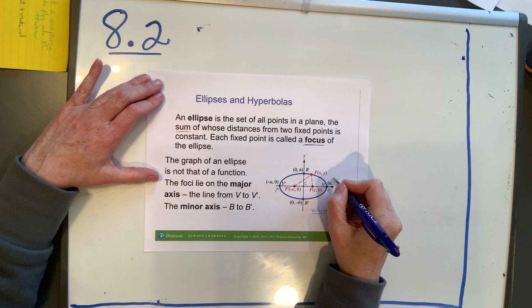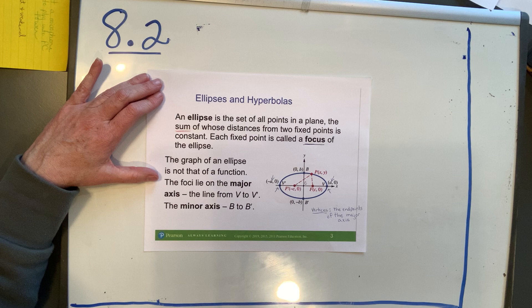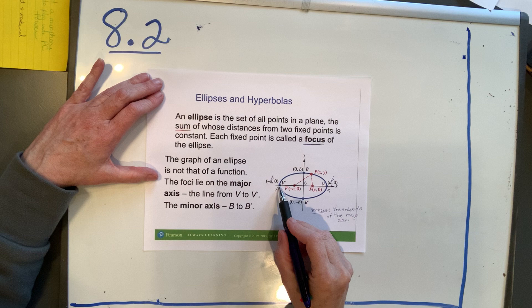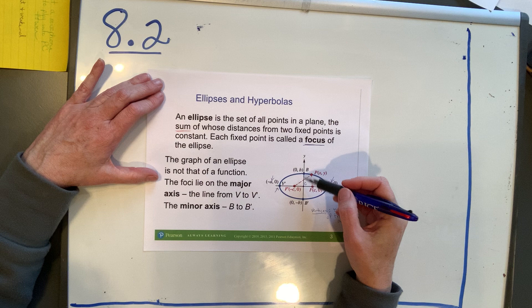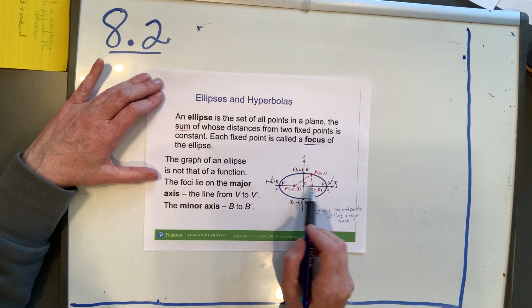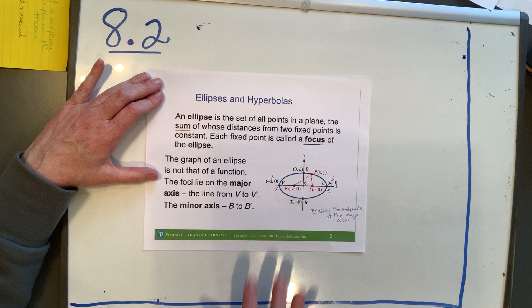You'll see some different letters here. Notice we have this number a. This particular ellipse is centered at the origin. When it's centered at the origin, the vertices are a units from the center, and the endpoints of the minor axis are b units from the center. The foci — there are two of them — they are c units from the center.